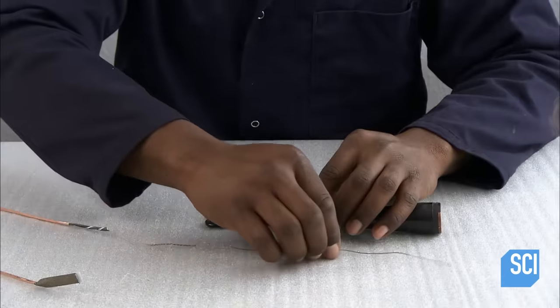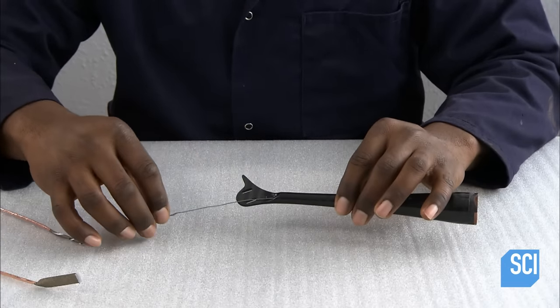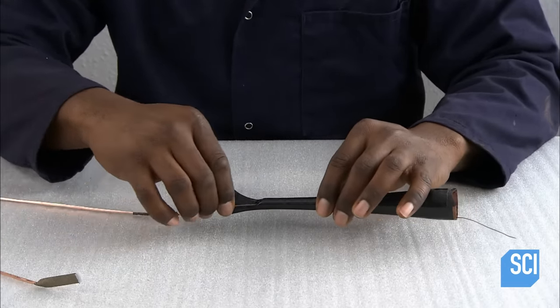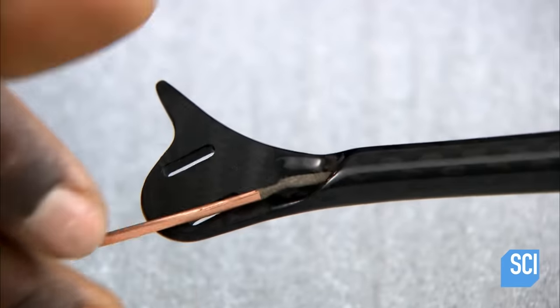A technician now assembles the tonearm, beginning with a tapered tube made of carbon fiber. It's a high-tech composite that's extremely stiff, so there should be no structural weakness in this crucial part.